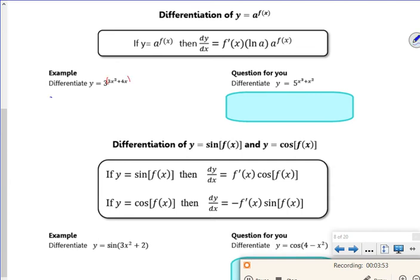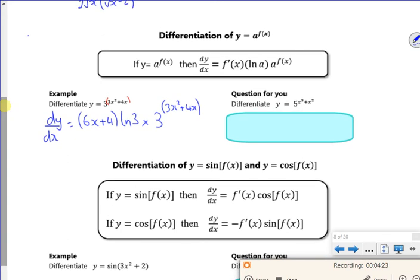So remember this one. Differentiate the power. So I've got 6x + 4. Then with this I have to do log of the base, and then I have to times it by 3 to the power of whatever it was before. So we differentiate the power and stick it in front. We do log of the base, and we do the original. Diff power, stick it in front. And then whatever the base is, and then we've got the original function.